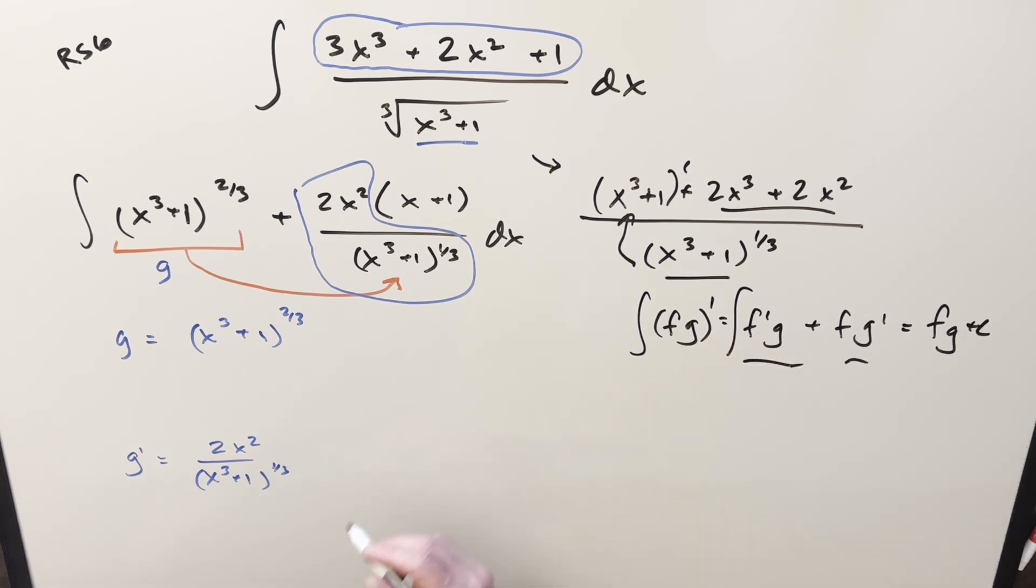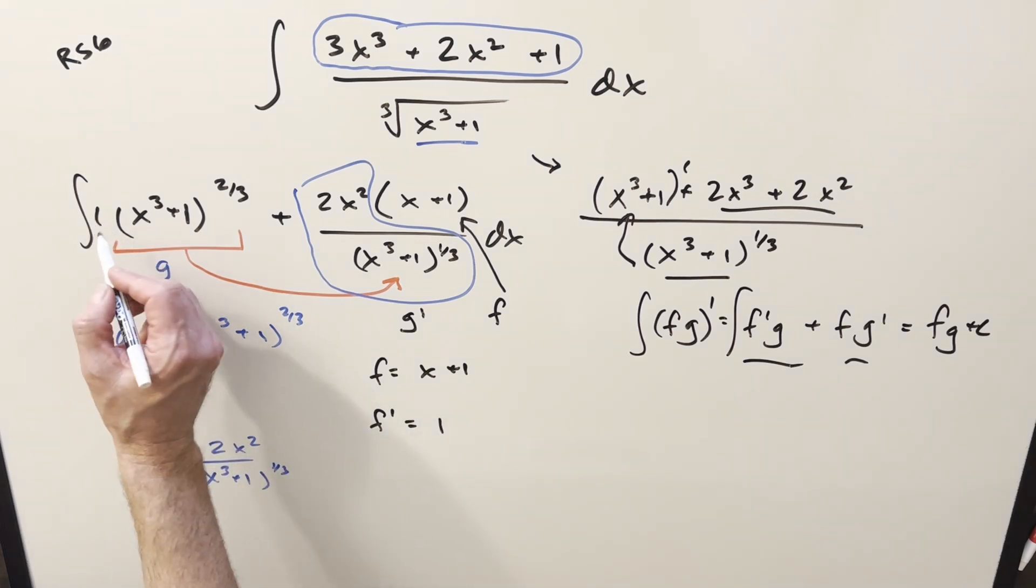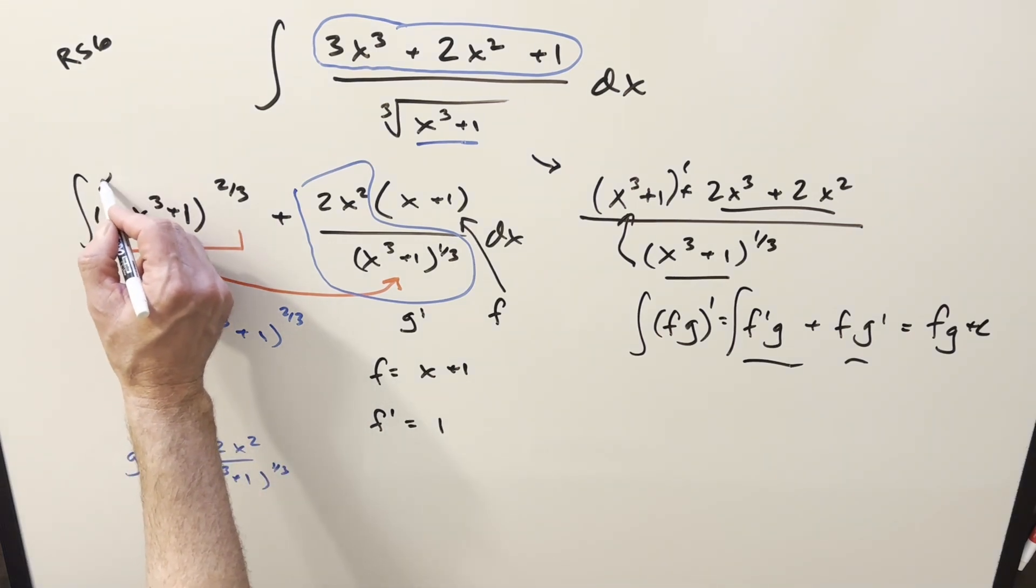And then what we need to deal with is the other part, f. So if this here is g prime, then for this to work, we want f to be this piece. So we want f to be equal to x plus 1. Finding a derivative is real easy on this. Derivative of this is going to be just 1. So for the f prime piece over here, I can just kind of create that, multiplying a 1, that's not going to change anything.